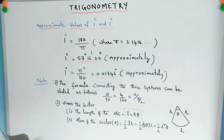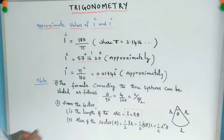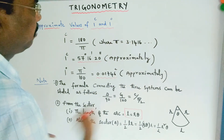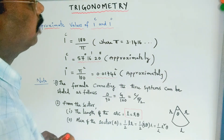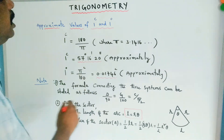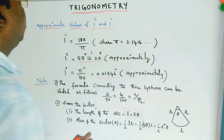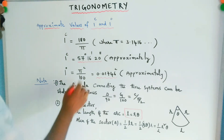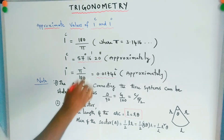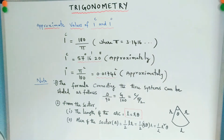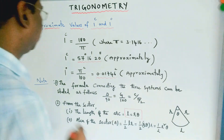Approximate values: 1 radian equals 180°/π. Since π ≈ 3.1416, one radian is approximately equal to 57 degrees 16 minutes 22 seconds. One degree equals π/180 radians, which is approximately 0.01746 radians.